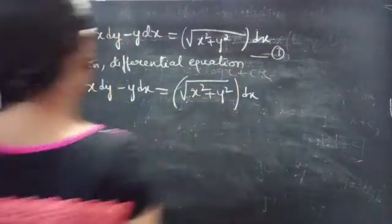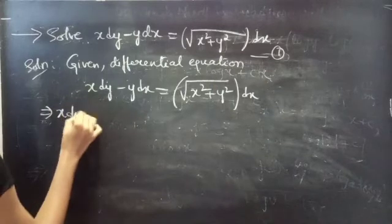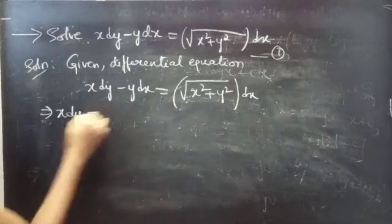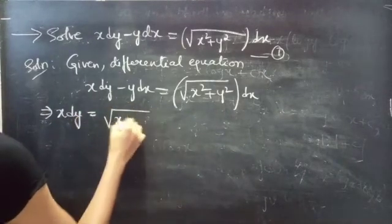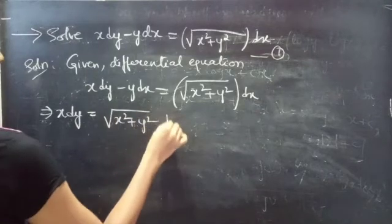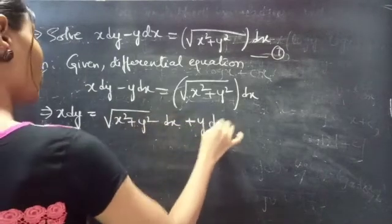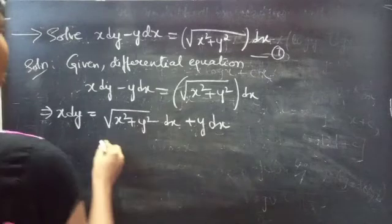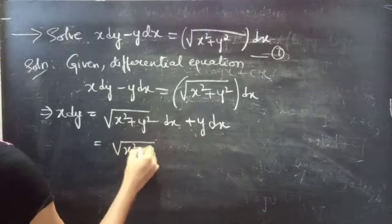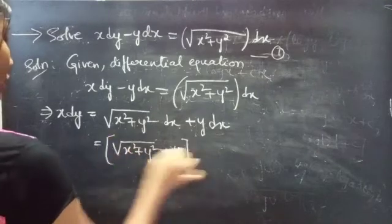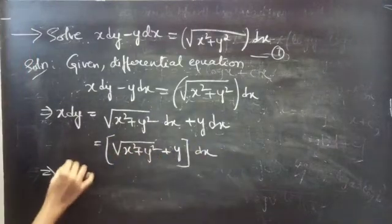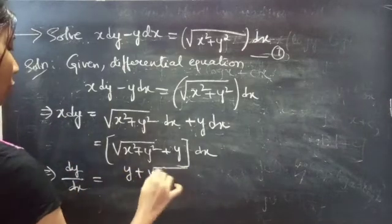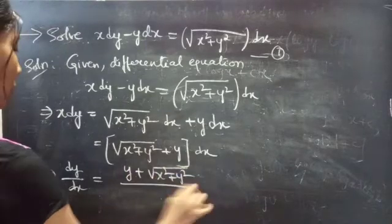Let's consider the given equation as equation 1. Take the term containing differential dx to the RHS. We get x dy equals to square root of x square plus y square into dx plus y dx. Taking dx common from these two terms, we get x dy = (square root of x² + y² + y) dx. Then, dy/dx equals to y plus square root of x square plus y square, all over x.